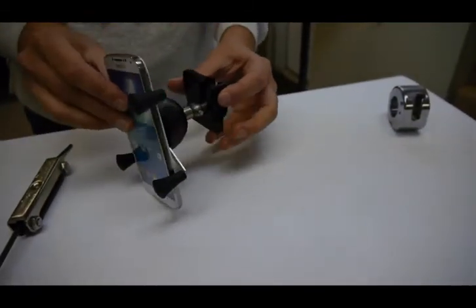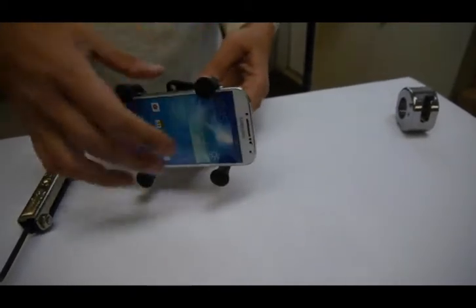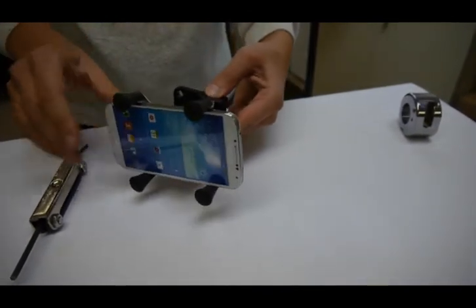Here's our brake clutch mount as an example, just showing you again you can put it in any angle, including a horizontal angle. So if you're using your phone for GPS, for example, you can set it in that way.